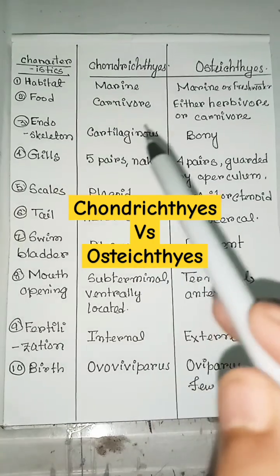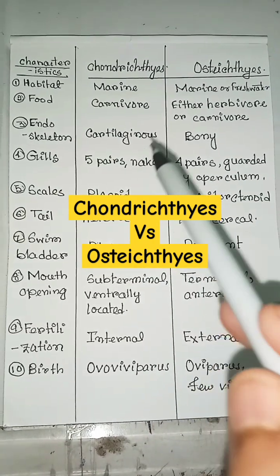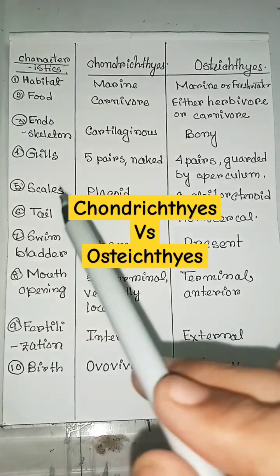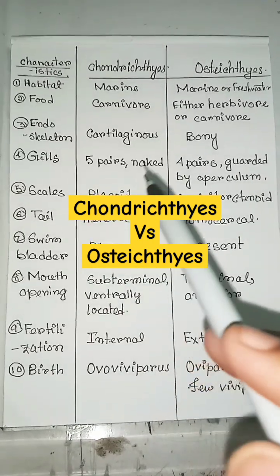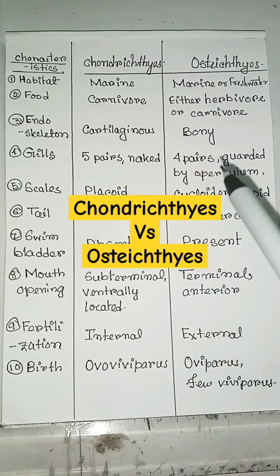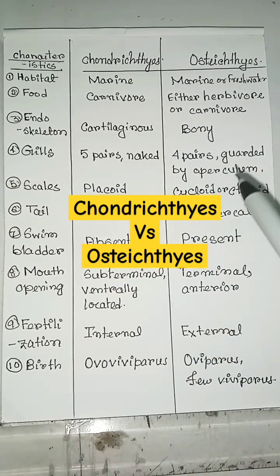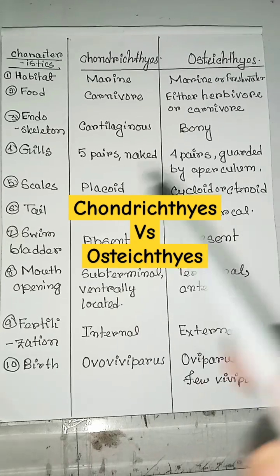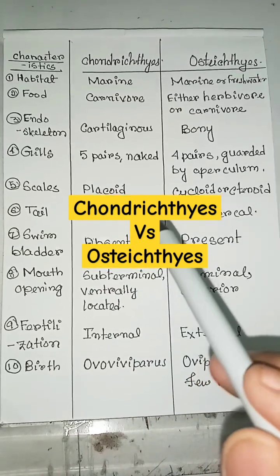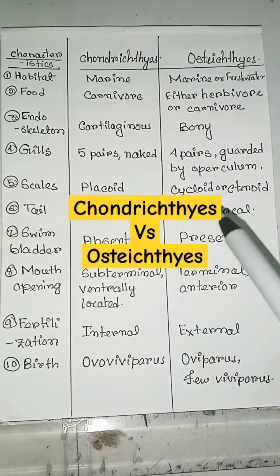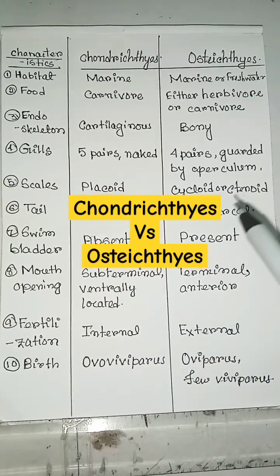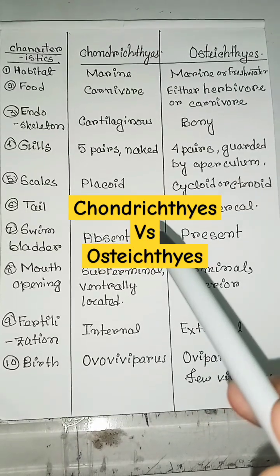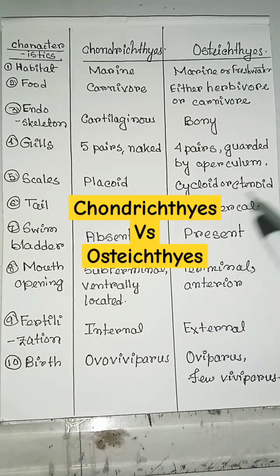Endoskeleton — cartilaginous in Chondrichthyes, but bony in Osteichthyes. Gills — 5 pairs and naked in Chondrichthyes, but 4 pairs guarded by operculum in Osteichthyes. Scales — placoid in Chondrichthyes, but cycloid or ctenoid in Osteichthyes. Tail — heterocercal in Chondrichthyes, but homocercal in Osteichthyes.